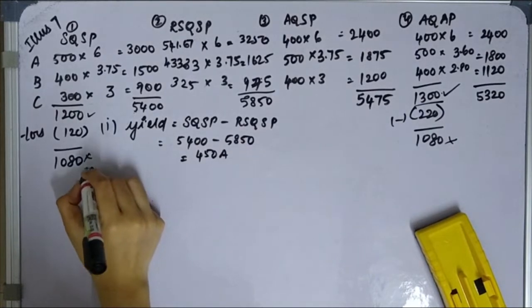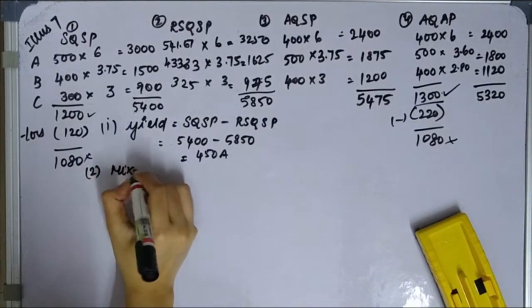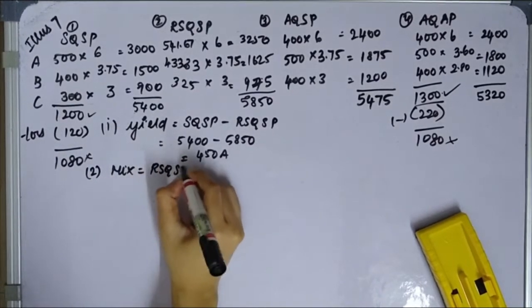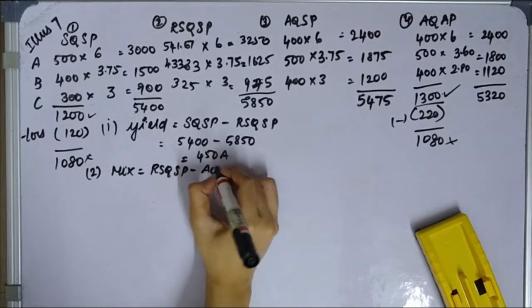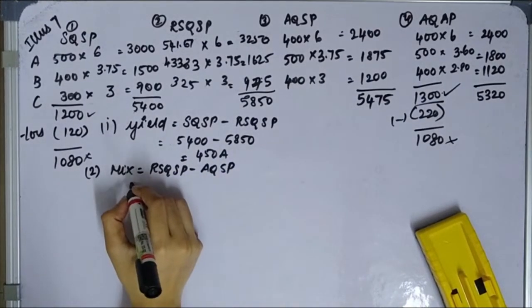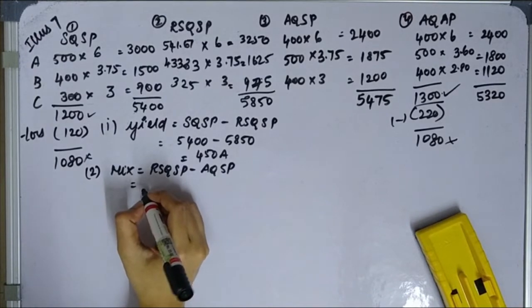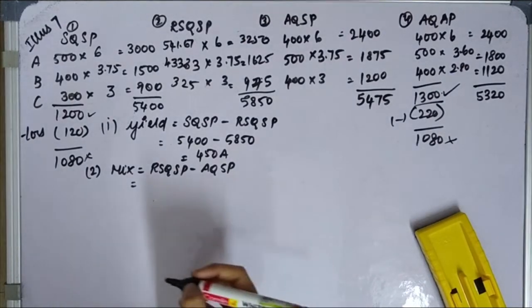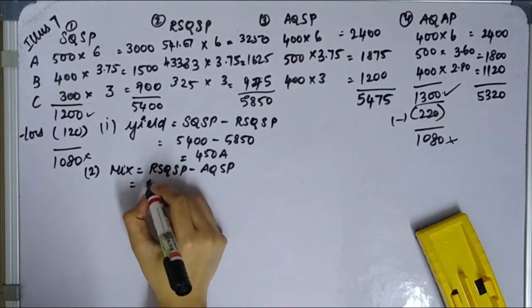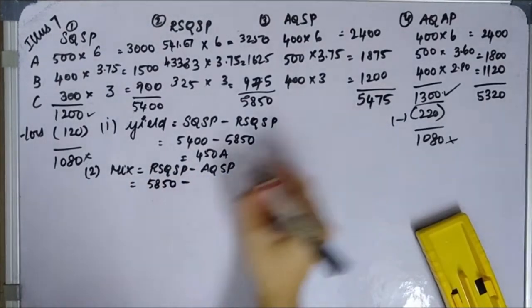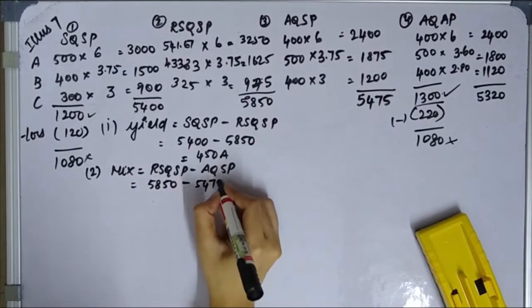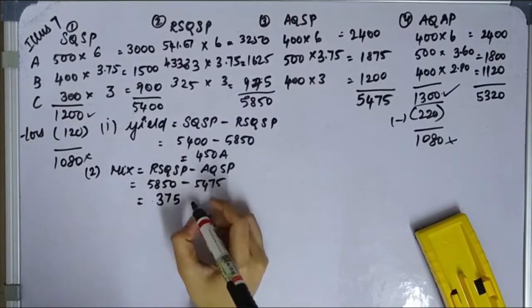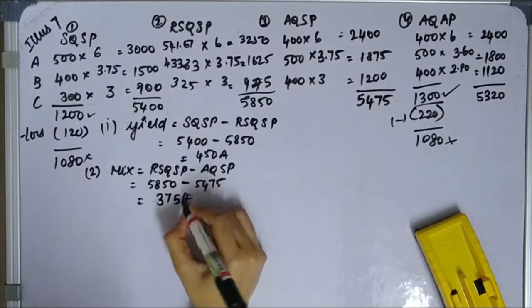Next, second one is Mix Variance, Material Mix Variance. Material Mix Variance formula is RSQ SP, AQ SP. In the previous video, the shortcut is easy to do this. So this is 5,850 minus AQ SP is 5,475. 375 as favorable.